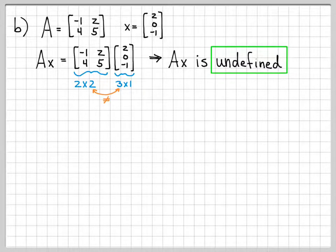Ax in this case is undefined. If somebody asks you to compute this quantity Ax for this particular A and X, there is no answer. It's undefined. We can't do this multiplication because the number of columns of A doesn't match the number of rows of X, and it has to for us to be able to do this operation.